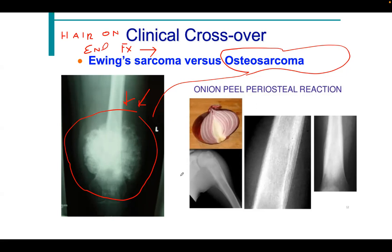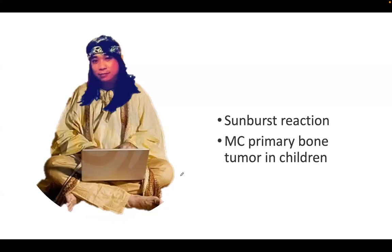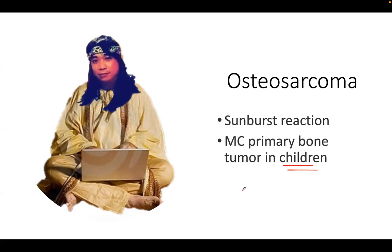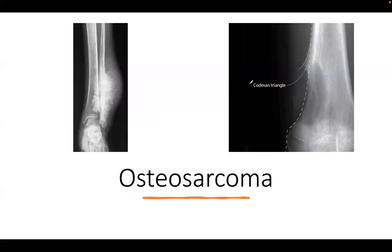Osteosarcoma is the most common primary bone tumor in children. Its two radiologic findings are the sunburst pattern and the Codman's triangle. Ewing's sarcoma also affects the diaphysis with a lytic onion-skin periosteal reaction and constitutional signs like fever and weight loss. Both tumors most commonly metastasize to the lungs.